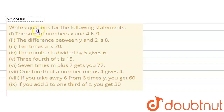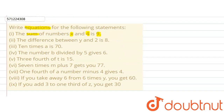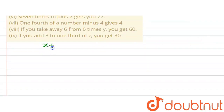The given question says to write equations for the following statements. In the first part, the sum of numbers x and 4 is 9. Sum means addition, so addition of x and 4 will be x plus 4, and this equals 9. So x + 4 = 9 is the equation for the first part.